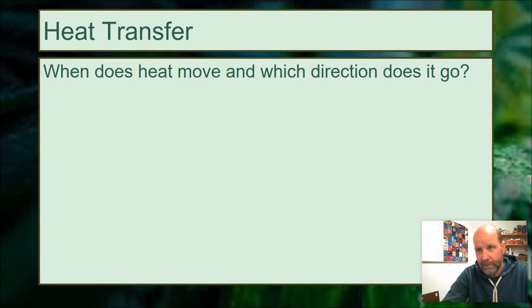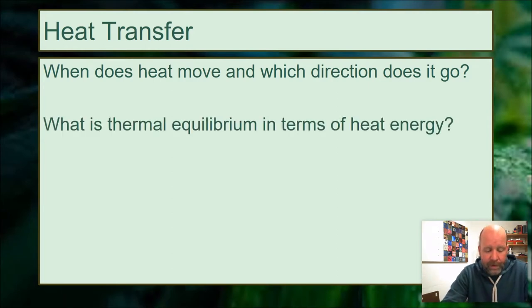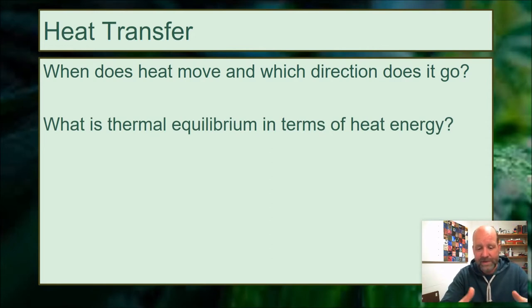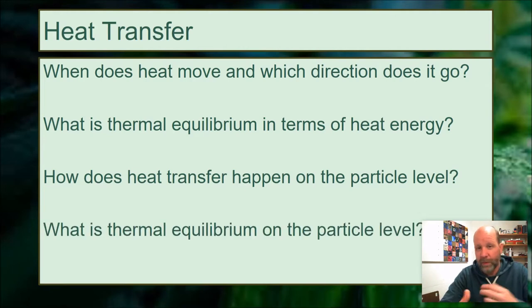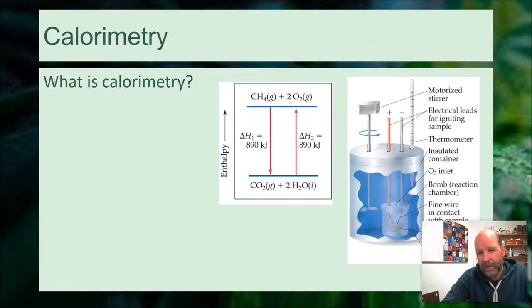Heat transfer is based on temperature, which is the average kinetic energy of particles. Thermal equilibrium is when everything in the system reaches the same average kinetic energy. On the particle level, we're talking about collisions that pass kinetic energy from one particle to another, so that eventually all of it is at equilibrium — meaning the average kinetic energy of all the particles is the same.